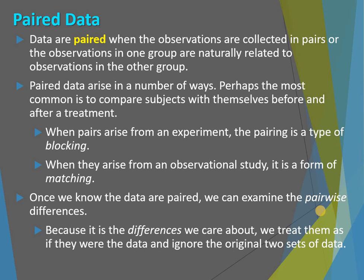When we have that type of pair, we're going to look at the pairwise data. Instead of what we did in the last unit — where we said okay I've got this group and this group and I'm going to look at their averages and compare them because the groups are separate — now I'm saying I've got this individual before and after, left and right, whatever my pair is. I'm going to find the difference first, and then look at all the averages. It's the differences within each pair that I care about, not the two completely separate groups.